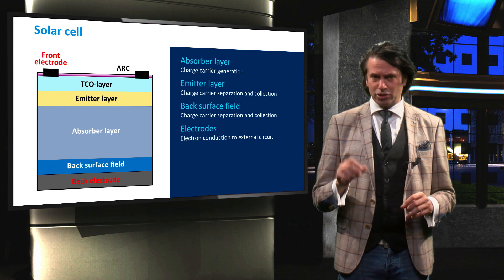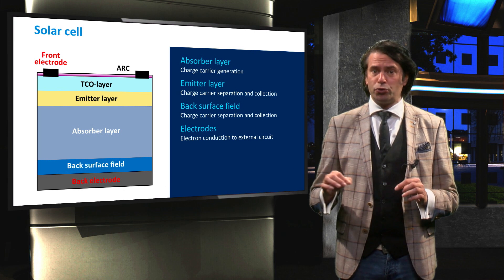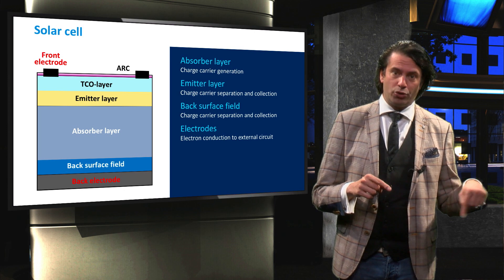When the solar cell is connected to an external circuit, the excited electrons will flow through the circuit to recombine with the holes at the other electrode.